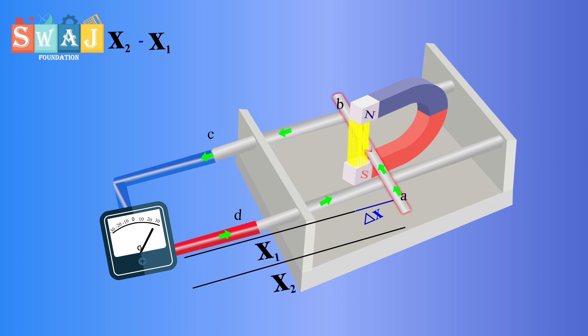Since the rod is moving with constant velocity v, therefore v equals del x over del t. As we know, motional EMF equation is e equals minus vBL.